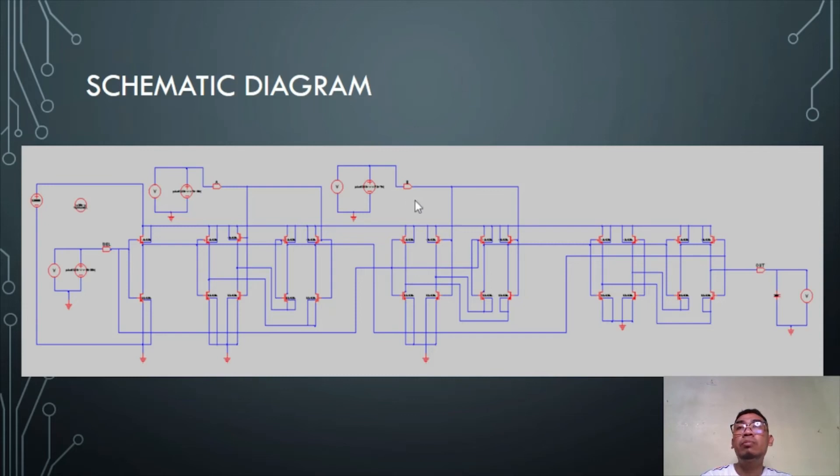At input B, we have the pulse of 0, 3.3, 0 nanoseconds delay, 1 nanosecond rise time and fall time, 75 nanoseconds period, and 37.5, 50% duty cycle.